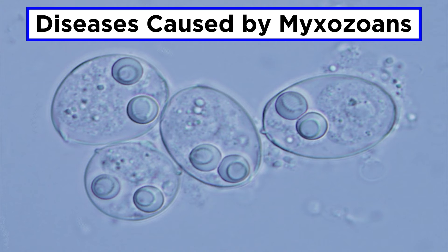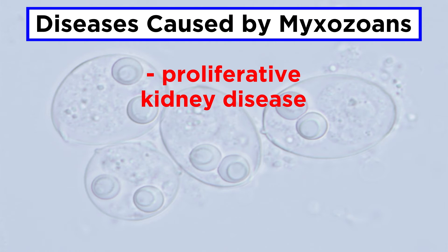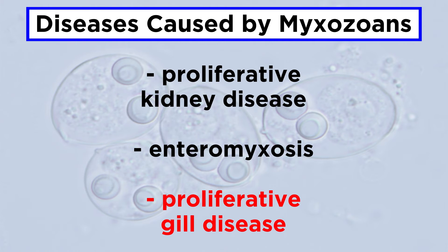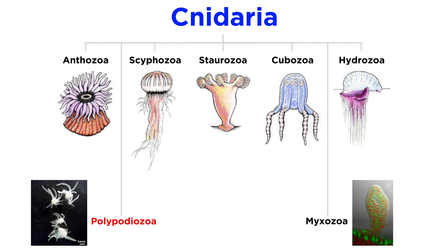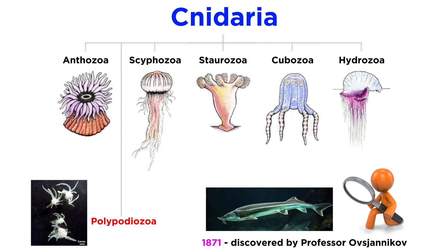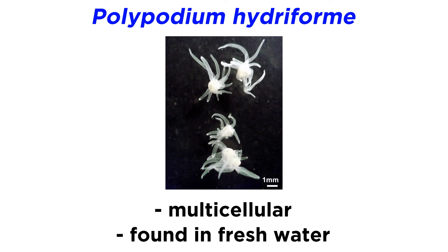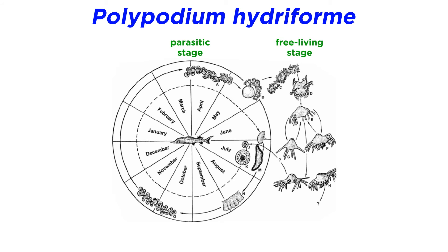Other diseases caused by mixozoans include proliferative kidney disease, enteromyxosis, proliferative gill disease, and many others. The sister taxon of mixozoa is polypodiozoa, which was discovered in 1871 by Professor Ovzjanikov in the eggs of the Volga sterlet, Acipenser ruthenus, and by now is found in almost all species of the order Acipenseriformes, where it severely compromises reproduction capacities. Unlike mixozoa, the only known species of polypodiozoa, Polypodium hydriforme, is multicellular and found in freshwater. Its life cycle consists of a parasitic and free-living stage.